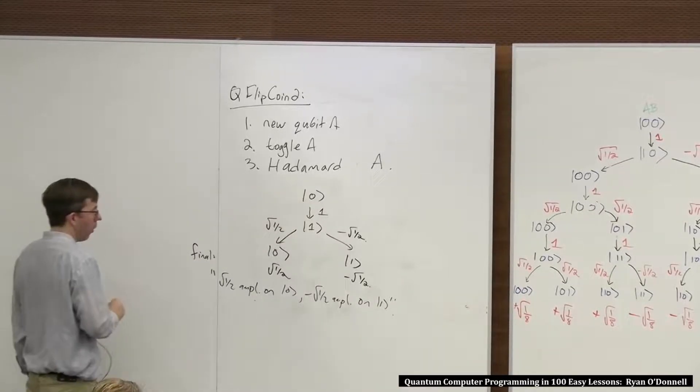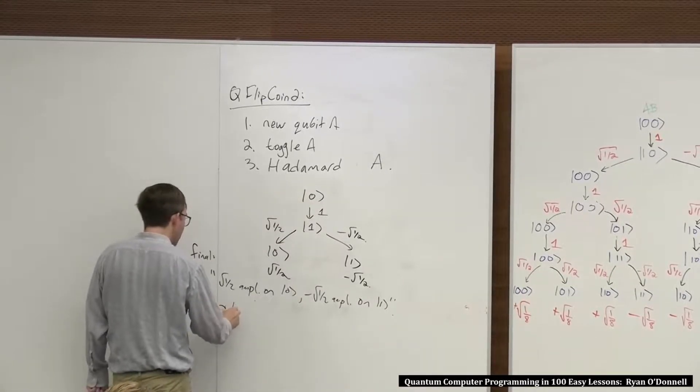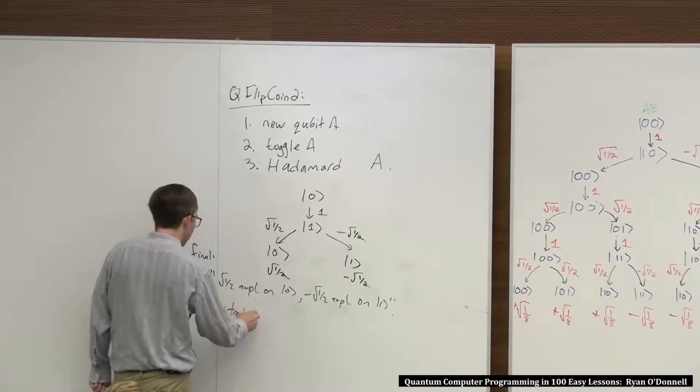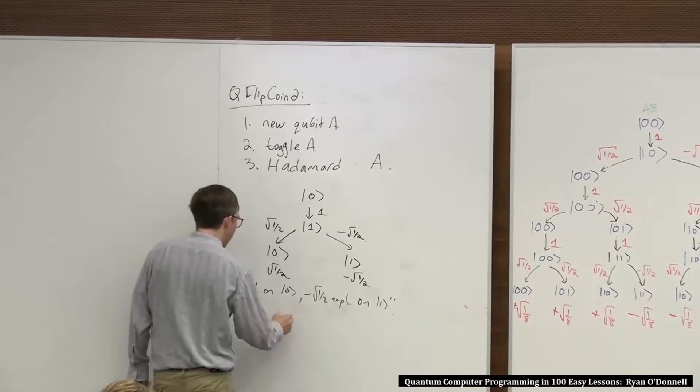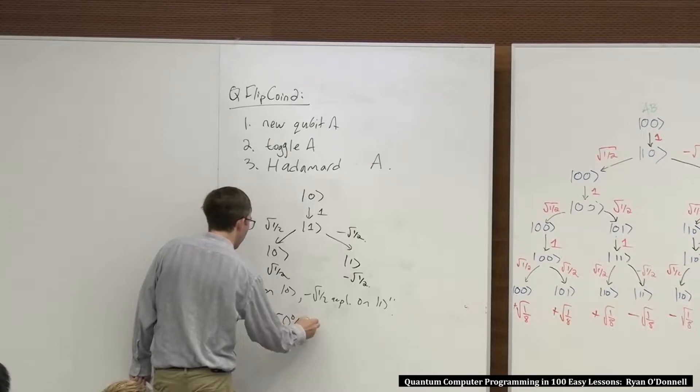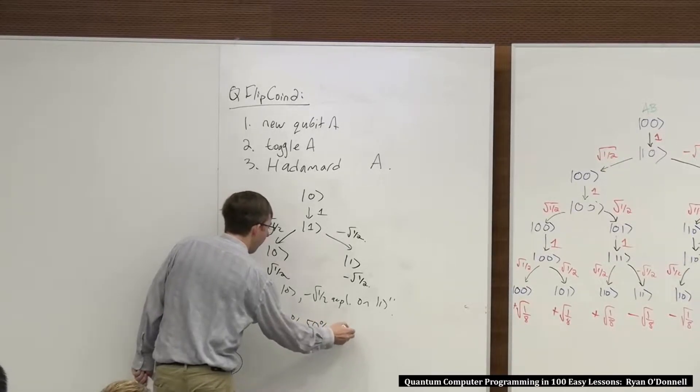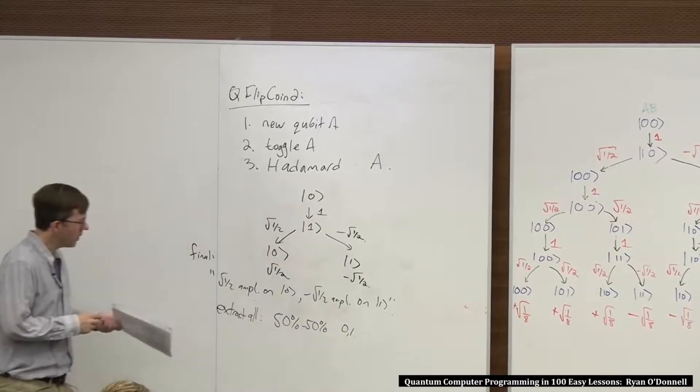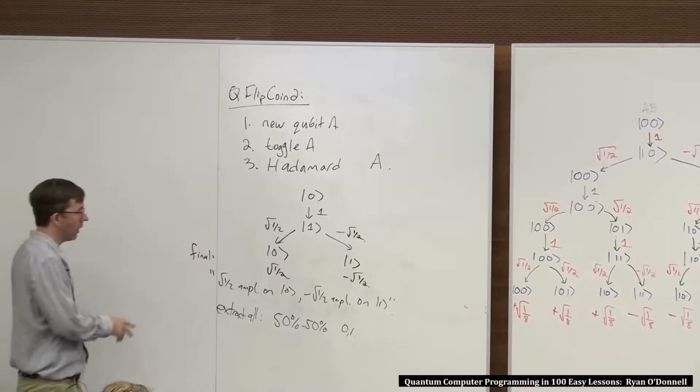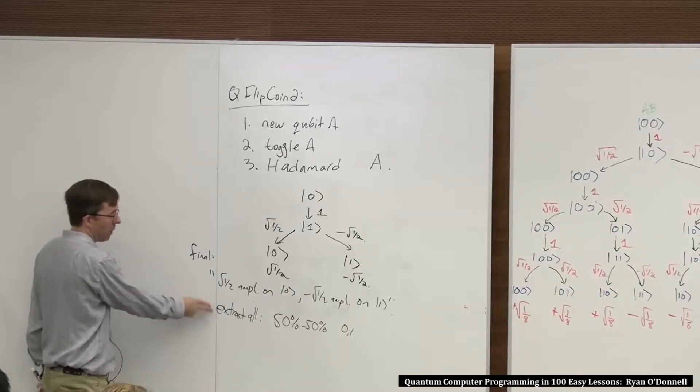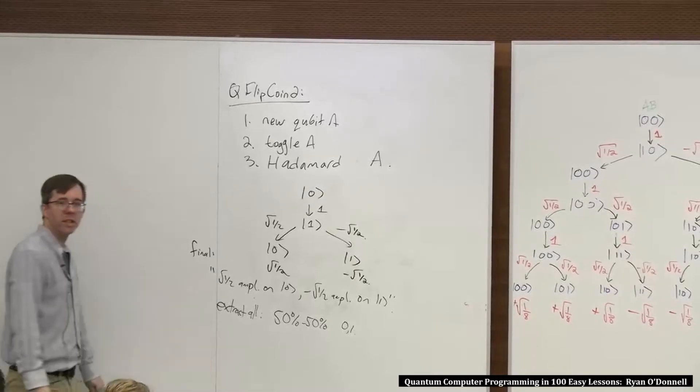This is a different state than we got before. On the other hand, it is true that if we were to do extract all now, it would again be 50-50, whether we get 0 or 1. This came up last time. This is possible that you get to two different states, but the visible output you see is the same.